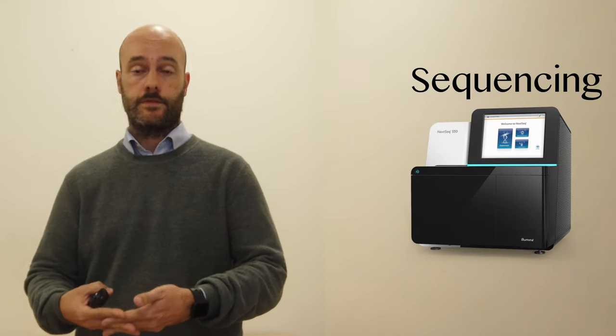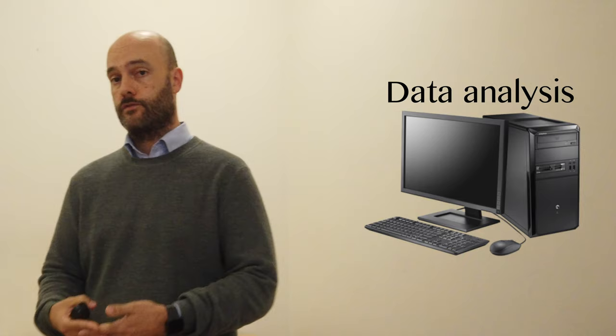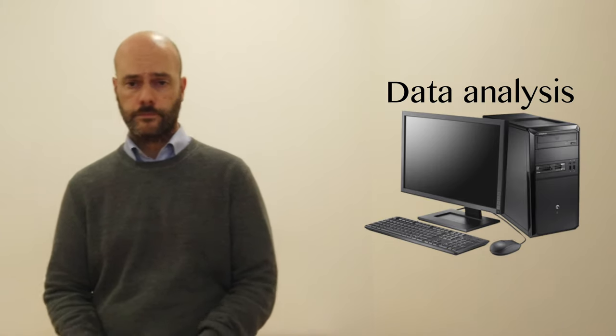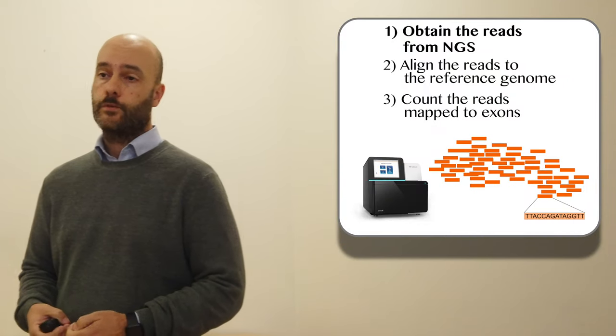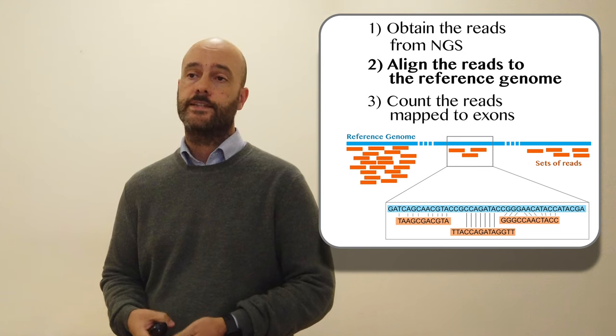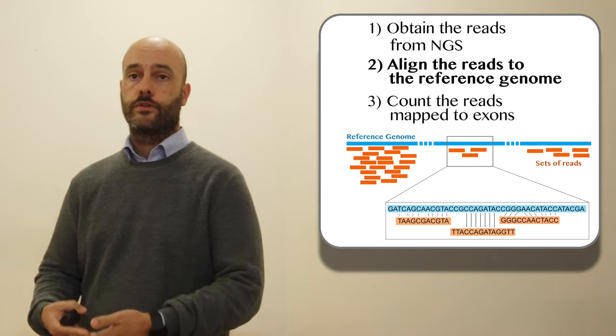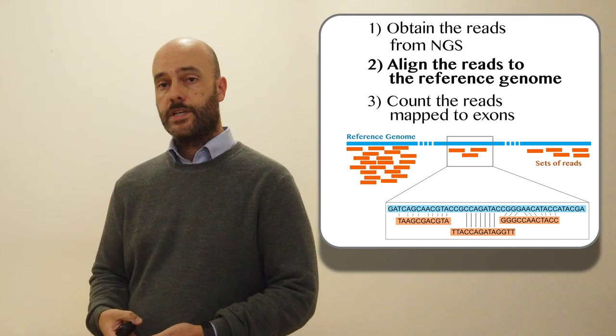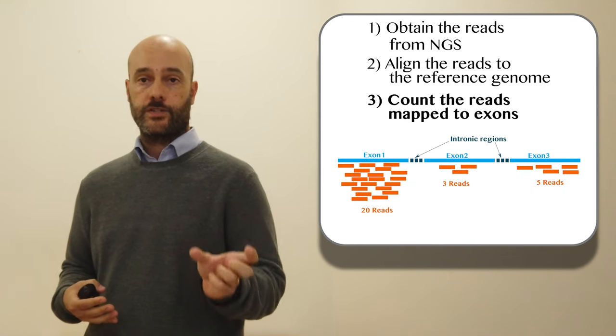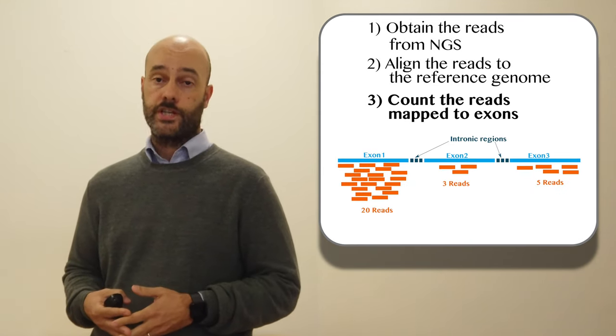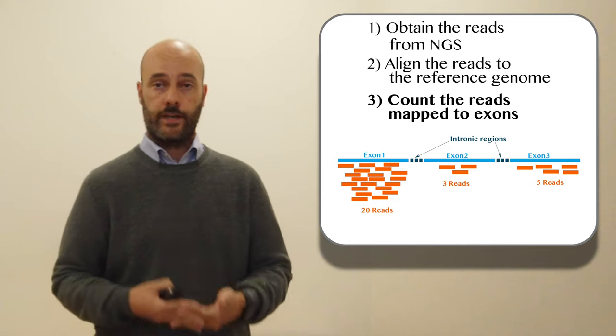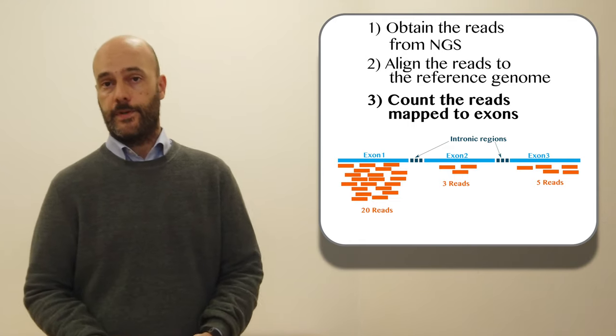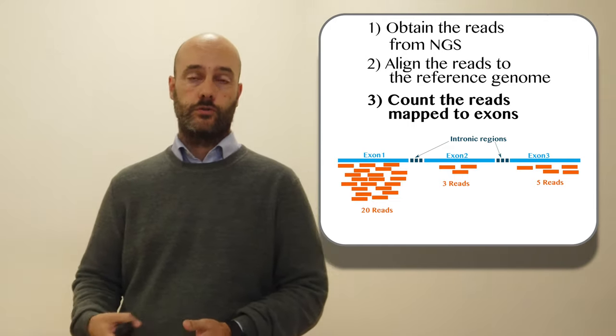The next part of the experiment is the sequencing and then the data analysis. For the data analysis part, the first step is to take the reads that we have sequenced using next-generation sequencing and align those reads to the reference genome. After the alignment of the reads, we have to count the reads that are mapping to exons of the genes, and for this we should use a well-known annotation of genes that we can obtain from different databases, like RefSeq from NCBI or Gencode from EMBL.